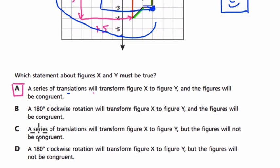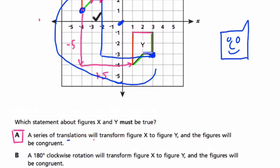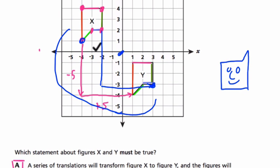And here it says a series of translations will transform the figure, but they will not be congruent. It's not possible, right? If you're taking a shape and just sliding it around, it's going to be congruent to itself. And again, the clockwise rotation in D, we know it's not that because the orientation of the shape is the same. All right, I hope this helped.